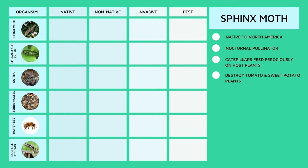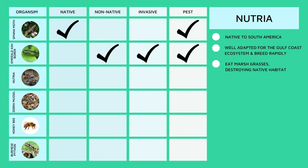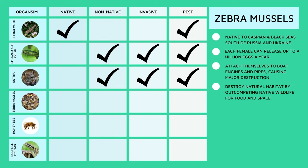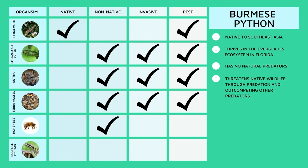Let's take a look at all of the organisms we talked about today and see where they fit on this chart. First, we have the Sphinx Moth — a great native nocturnal pollinator, but its caterpillars destroy tomato and sweet potato plants, making it a native pest. The emerald ash borer is non-native and responsible for the destruction of ash trees, making it invasive. Nutria are not native and destroy the natural wetland habitat of the Gulf Coast. Zebra mussels were accidentally introduced and quickly multiplied, causing harm to native waterways. Honeybees are not originally from North America but have greatly increased the success of crops and provide delicious honey. Burmese pythons have thrived in their new Everglades home, almost eating some native wildlife into extinction.